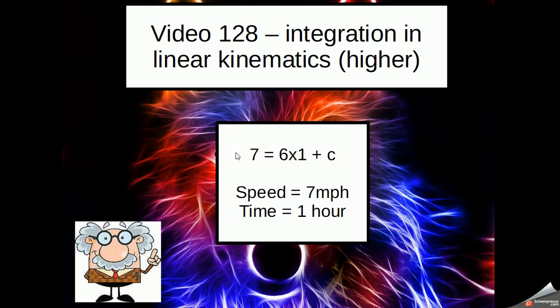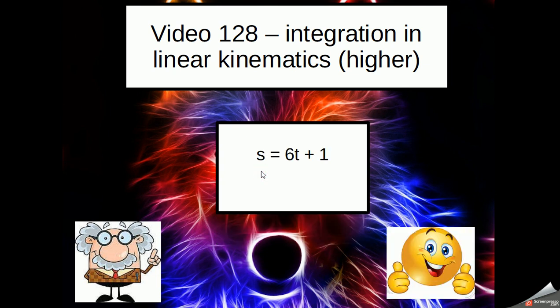So I replace the velocity or the speed with 7 and the time with 1, giving me 7 is equal to 6 plus that constant. Move the 6 over as in usual algebra, and it becomes the constant is 1. I can now write my equation as speed is equal to 6 times the time plus 1.